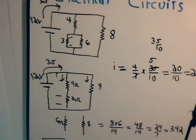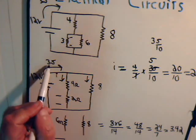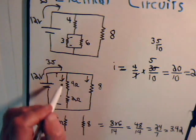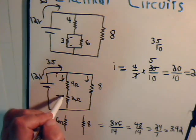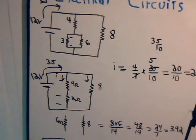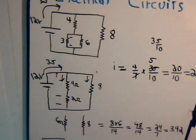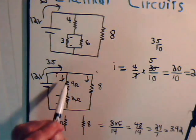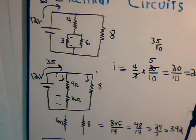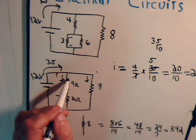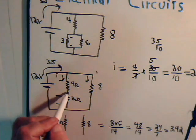So of the 3.5 amps, that's our source current, 2 amps go through these two resistors, and then clearly 1.5 amps goes through this resistor. Now these resistors are in series, so the 2 amps go through this resistor and 2 amps go through this resistor.